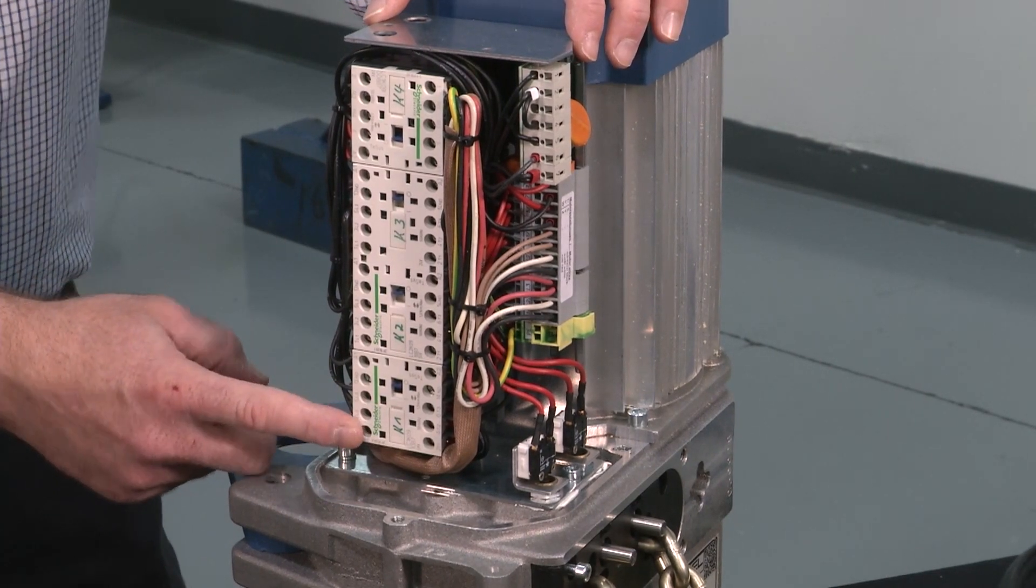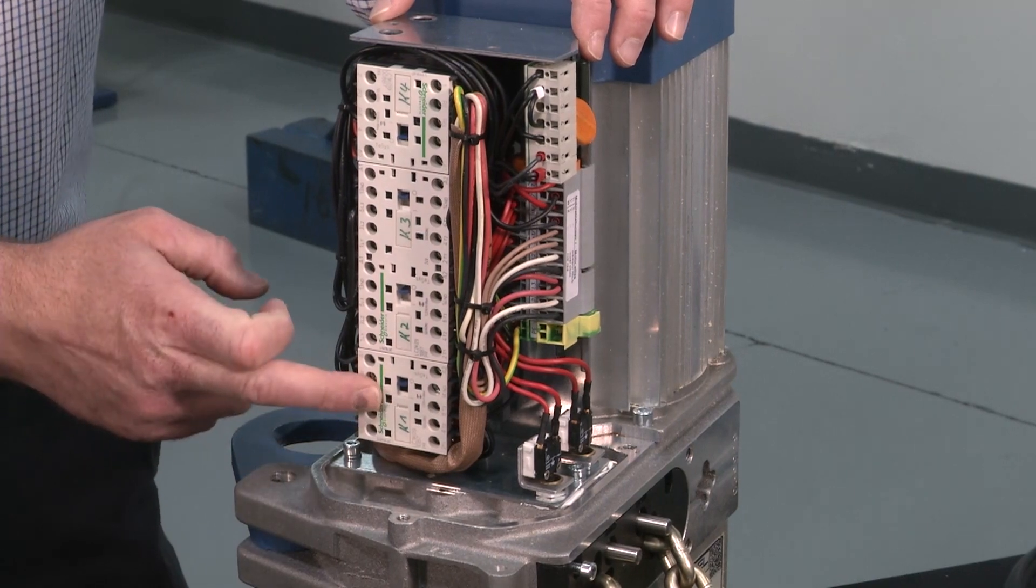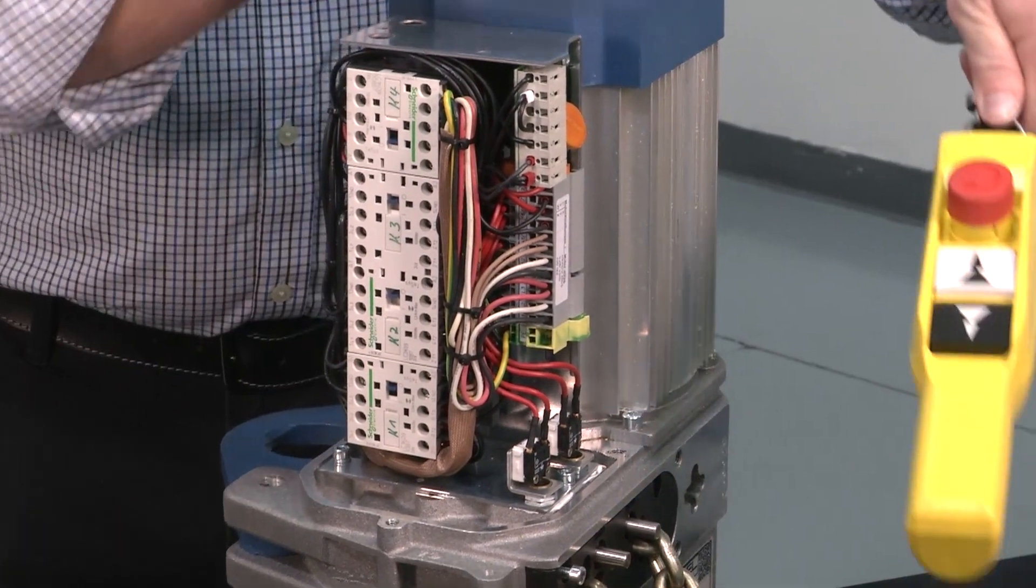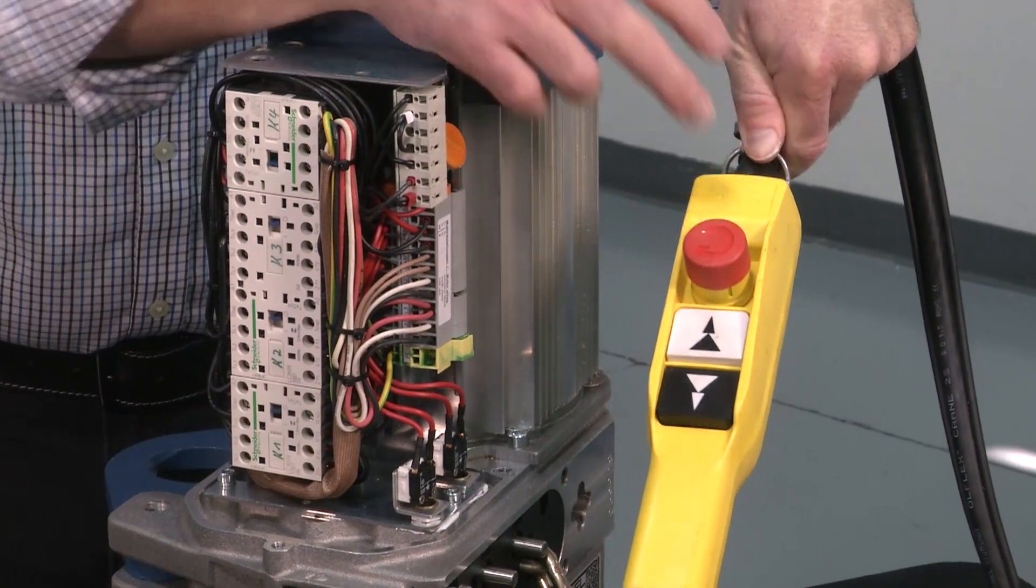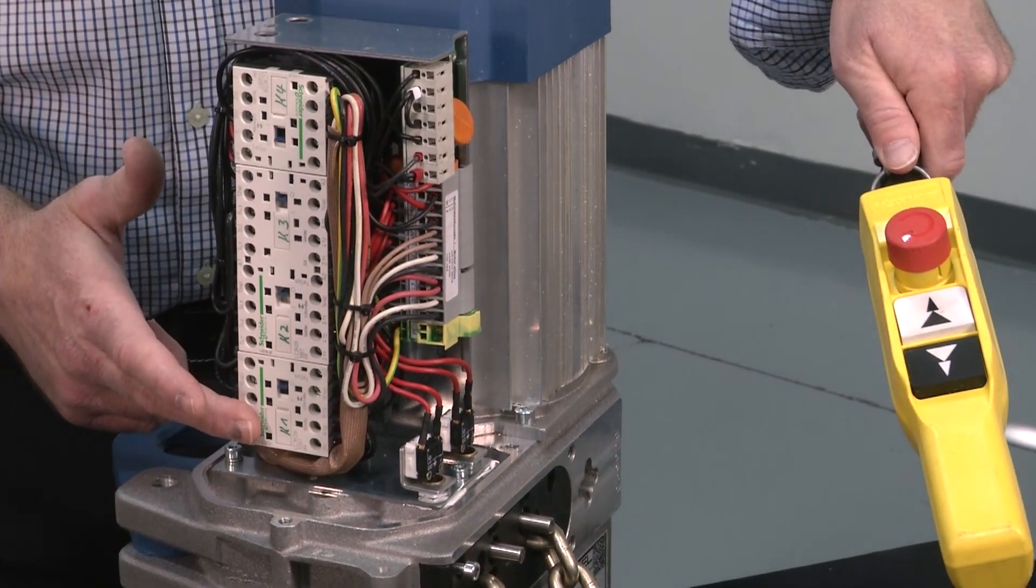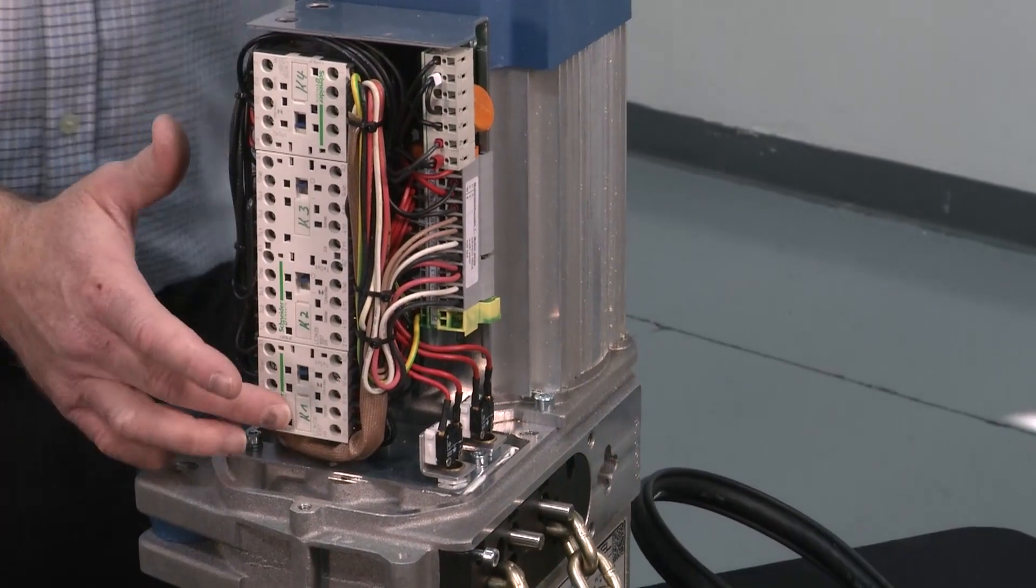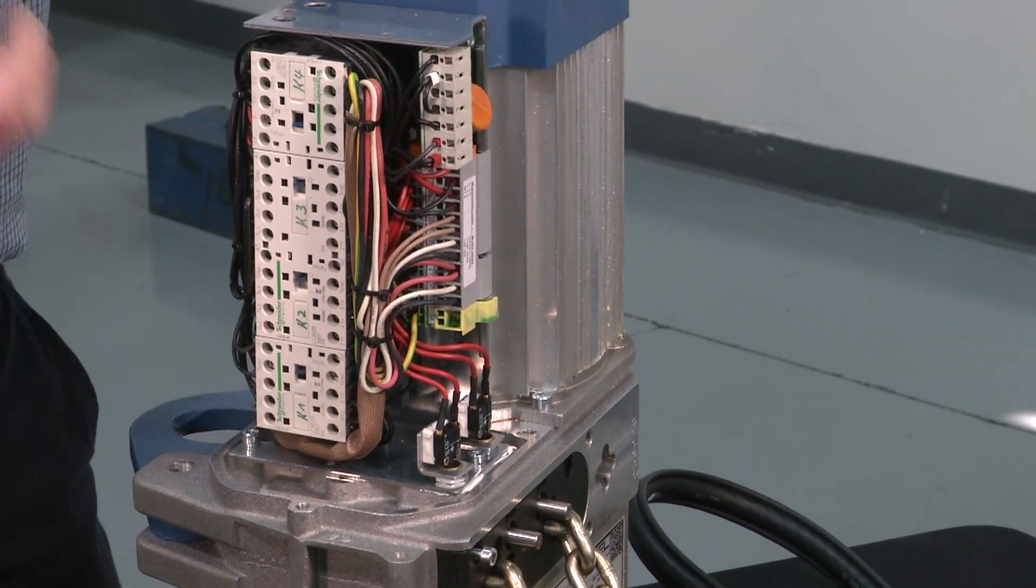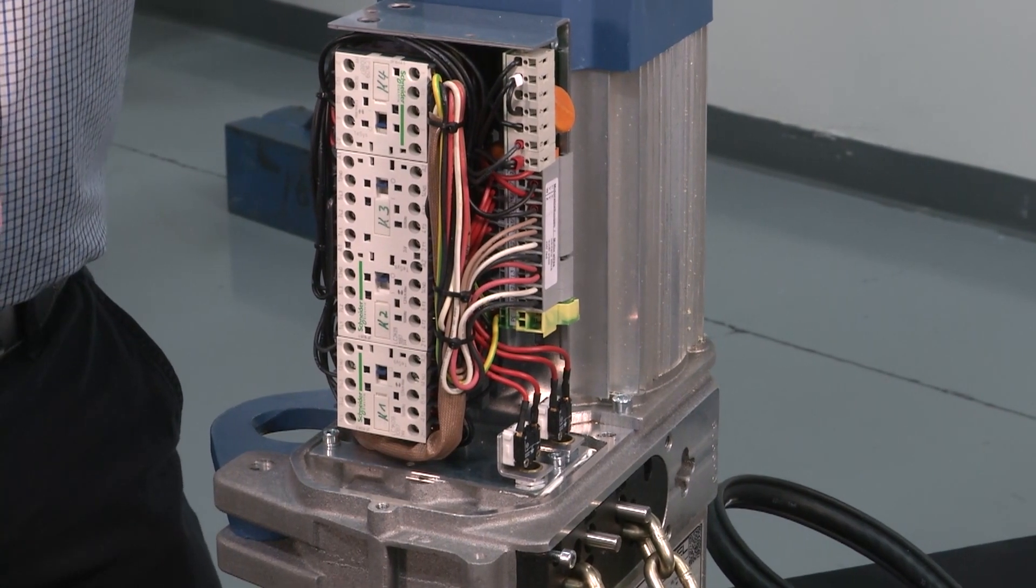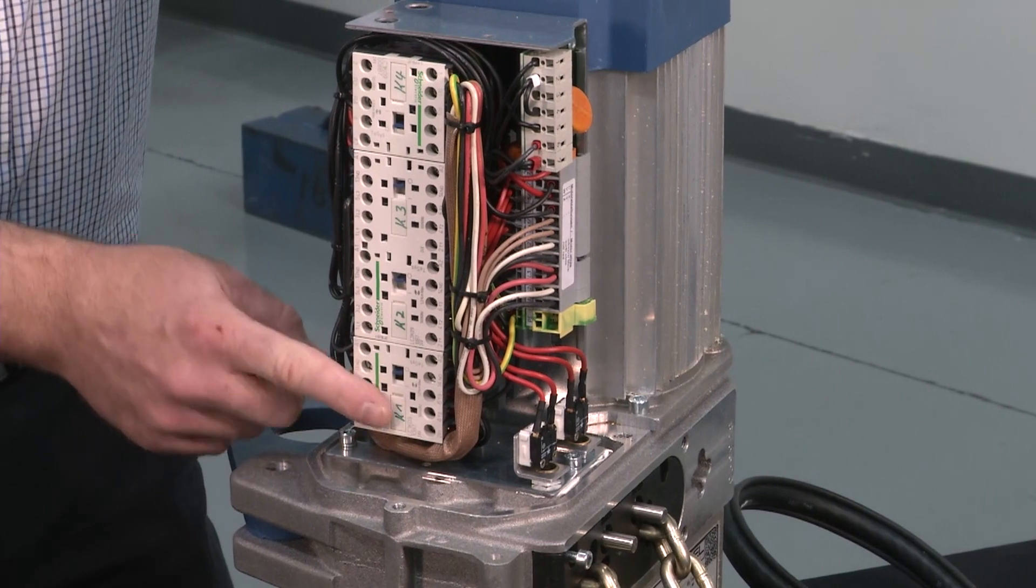So every hoist comes with an e-stop push button, and every e-stop is tied to a true mainline contactor. There are other hoists out there that don't have actual mainline contactors. Sometimes you'll see they're just simply using the e-stop to break the control line, but we're actually making and breaking an actual mainline contactor with that e-stop.